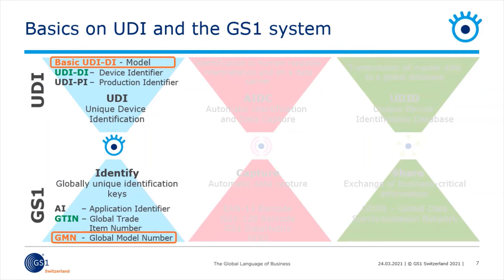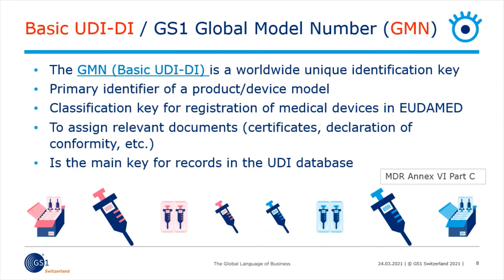On the next few slides, I will talk about the basic UDI-DI. We saw the basics of identification and that we need a GS1 company prefix. The basic UDI-DI — in the GS1 system it is called GMN, Global Model Number — is required in the UDI as a unique classification key for medical devices in Eudamed. It is the first key you will enter in Eudamed. It is used for the unique identification of product models.